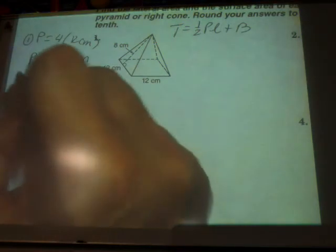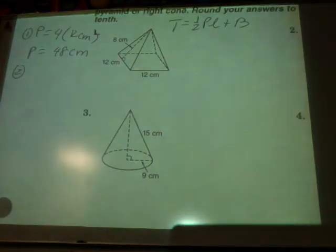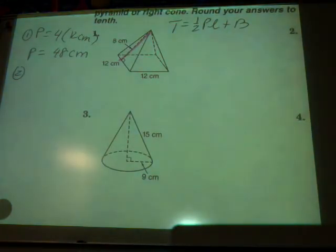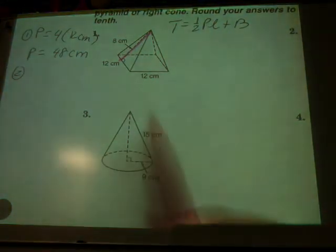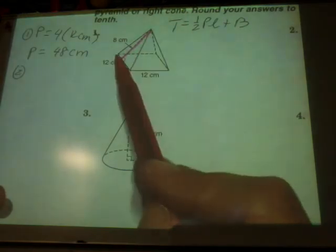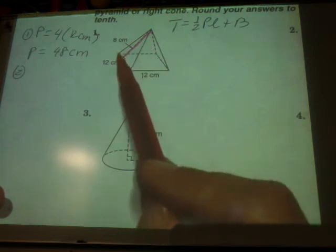And then step two, I want to know the slant height. Is this right here the slant height? Yes. If they had given me this edge right here instead, then this right here would be bisected by this slant height. So that would be six.